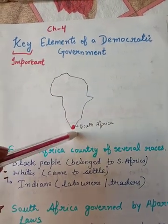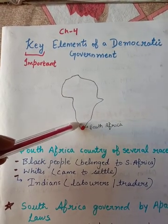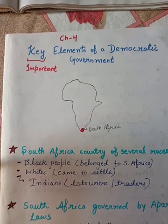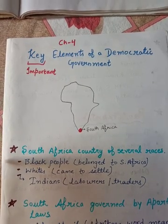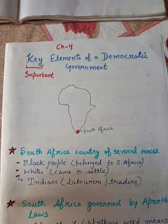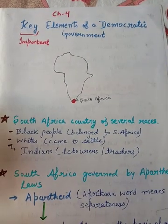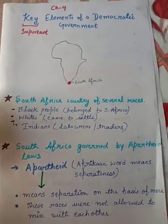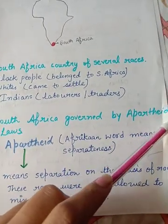In this chapter, first of all it is given about the country South Africa, which lies in the African continent. It lies on the southernmost tip of the African continent. South Africa consists of several races: black people who belong to South Africa, whites who came to settle, and Indians who came there as laborers and traders. South Africa was governed by the apartheid laws.